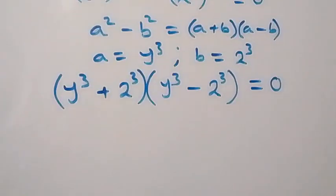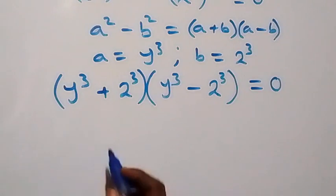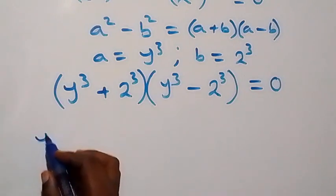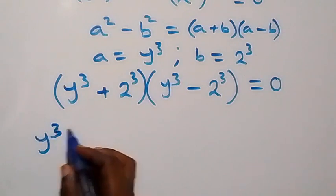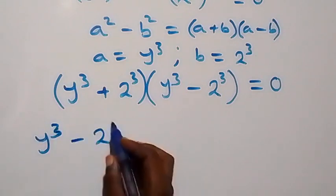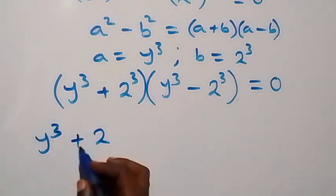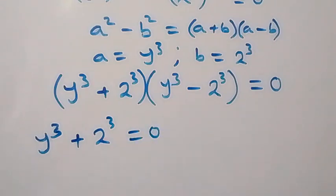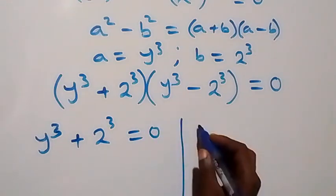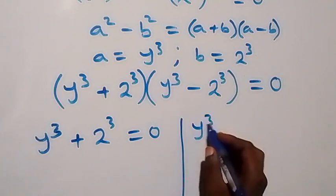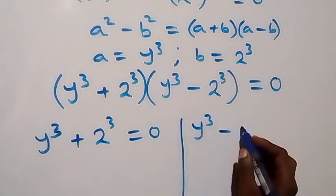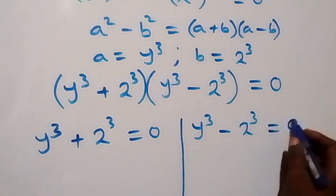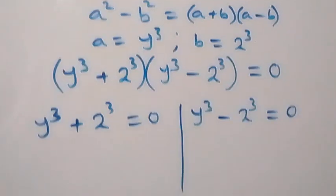From here we now have two possible cases. The first case: y raised to power 3 plus 2 raised to power 3 equals to zero. Or the second case: y raised to power 3 minus 2 raised to power 3 equals to zero.